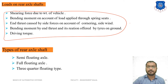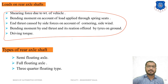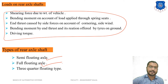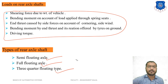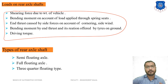Basically, there are three types of rear axles: semi-floating axles, full-floating axles, and three-quarter floating axles. Let's understand one by one what is meant by semi-floating, full-floating, and three-quarter floating rear axle shafts.